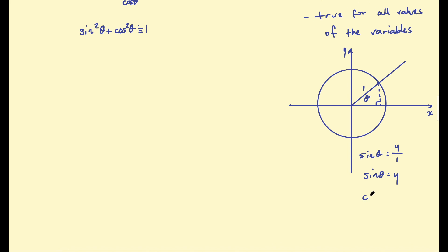If we take the cosine of theta, that's the adjacent side. Remember, this is the angle I'm talking about. The adjacent side is the x value of this coordinate. So cosine theta equals x over the hypotenuse, which is 1, so cosine of theta equals x. We also know the equation of a circle: if the center is at (0, 0), the equation is x squared plus y squared equals the radius squared.